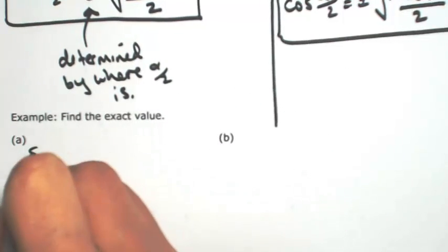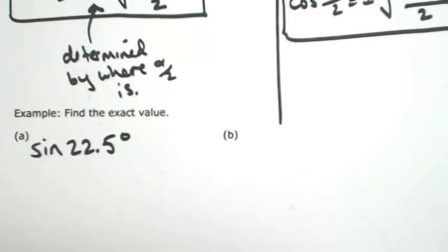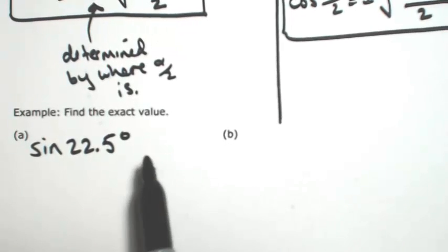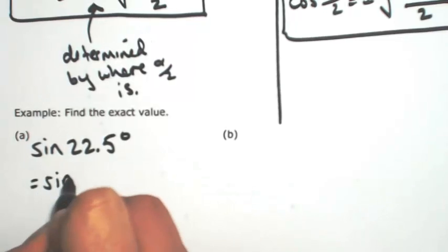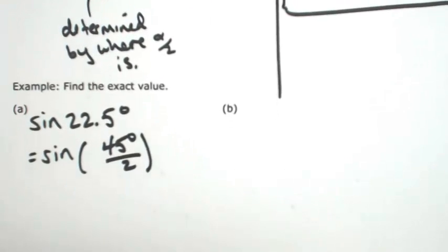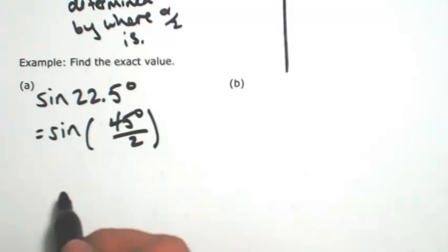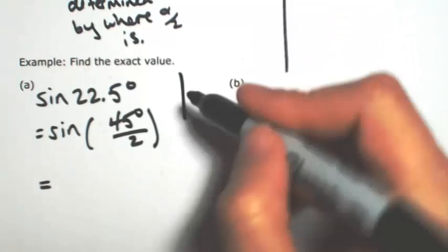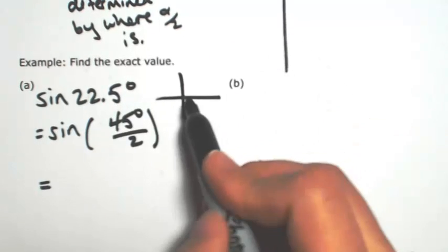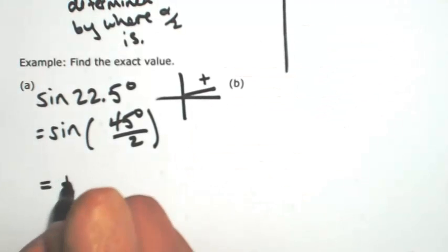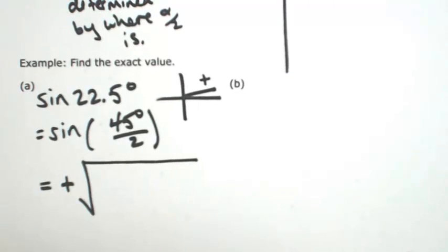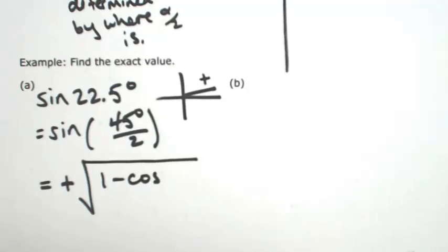Let's find the exact value of the sine of 22.5 degrees. The question to ask is: what is 22.5 degrees half of? Just multiply 22.5 by 2, which is 45 degrees. So this is the sine of 45 degrees over 2. Now I need to figure out: is it plus or minus? Drawing where 22.5 degrees is — it's obviously in the first quadrant — so the sine is going to be positive. So we have 1 minus cosine of 45 degrees, still under the radical, divided by 2.